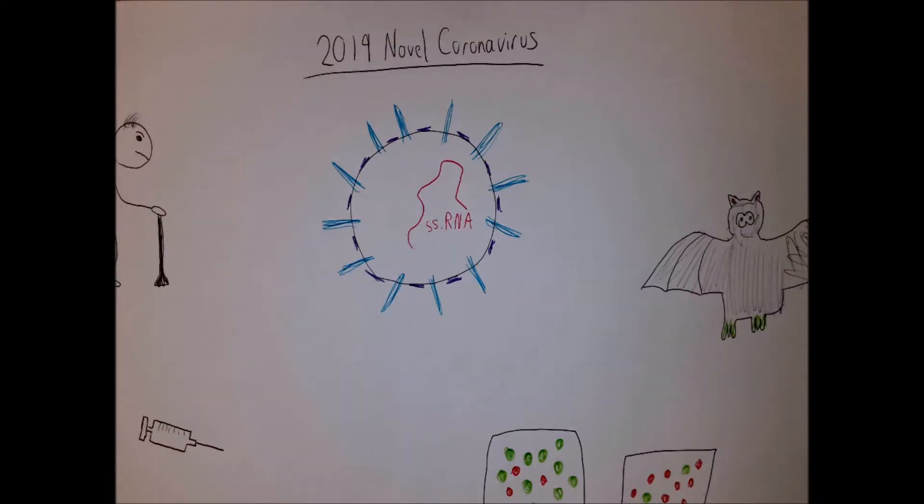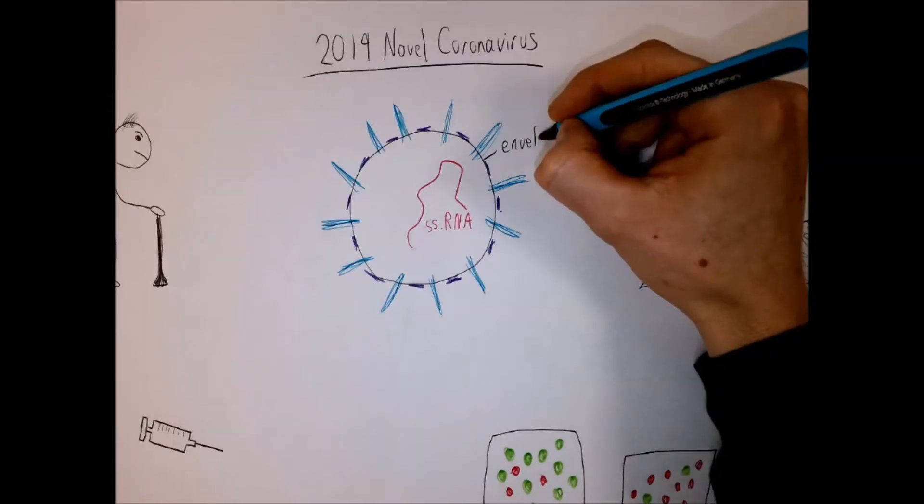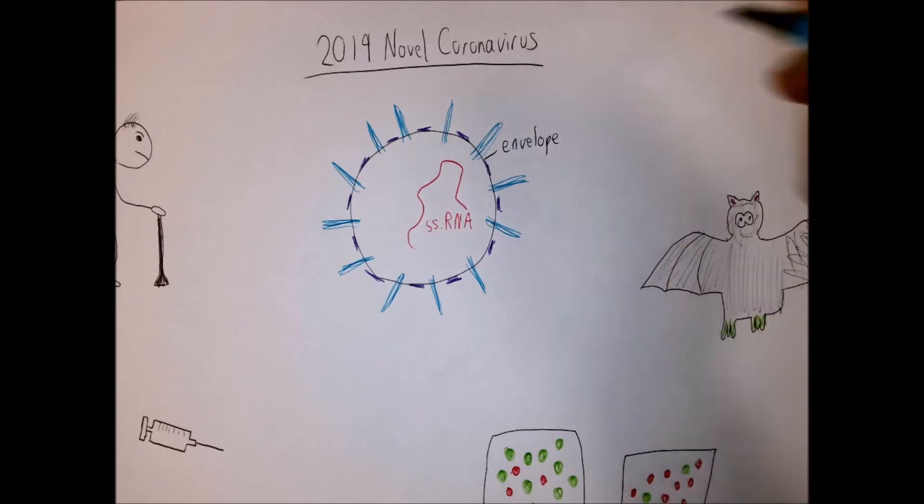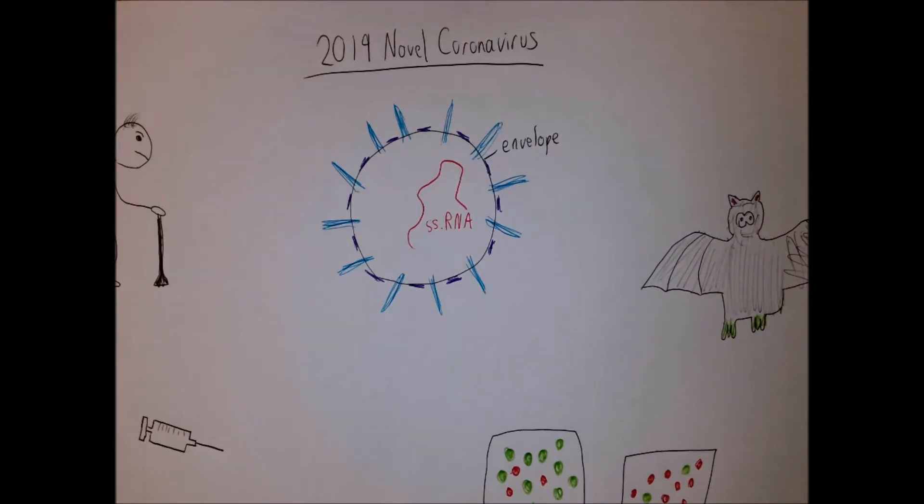Around that, it's got a protein layer. So this is an envelope, it's called, which contains the RNA, and it gives it a little bit of protection against the elements so the virus can survive in the atmosphere for a while after it's been put into the air.